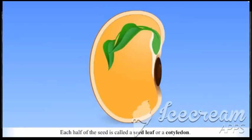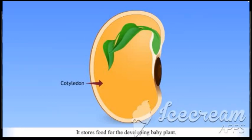Each half of the seed is called a seed leaf or a cotyledon. It stores food for the developing baby plant.